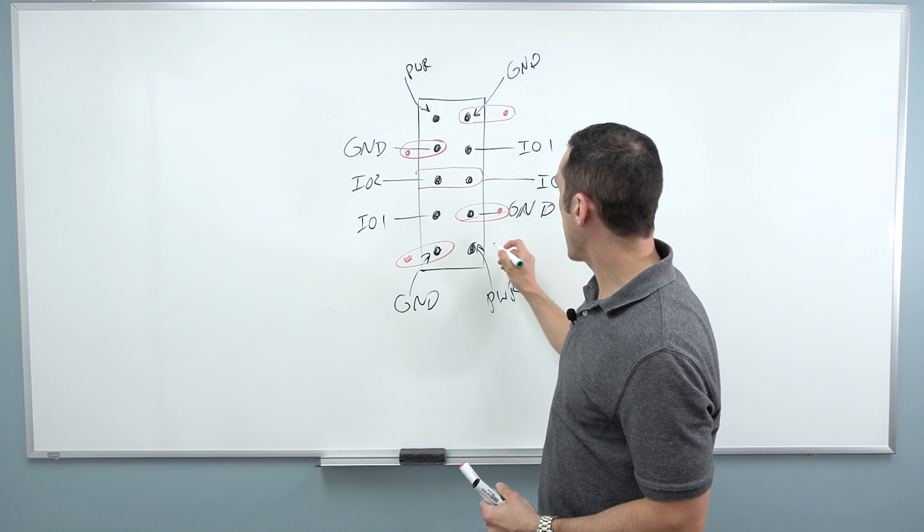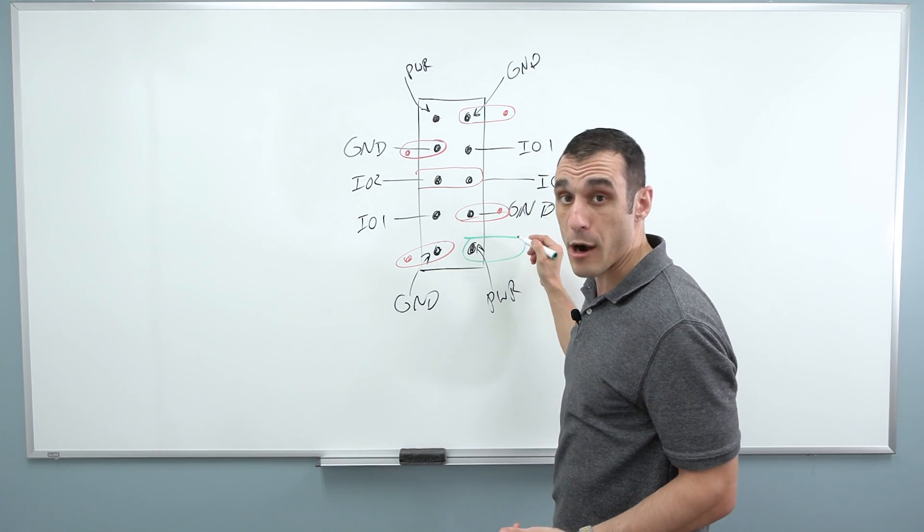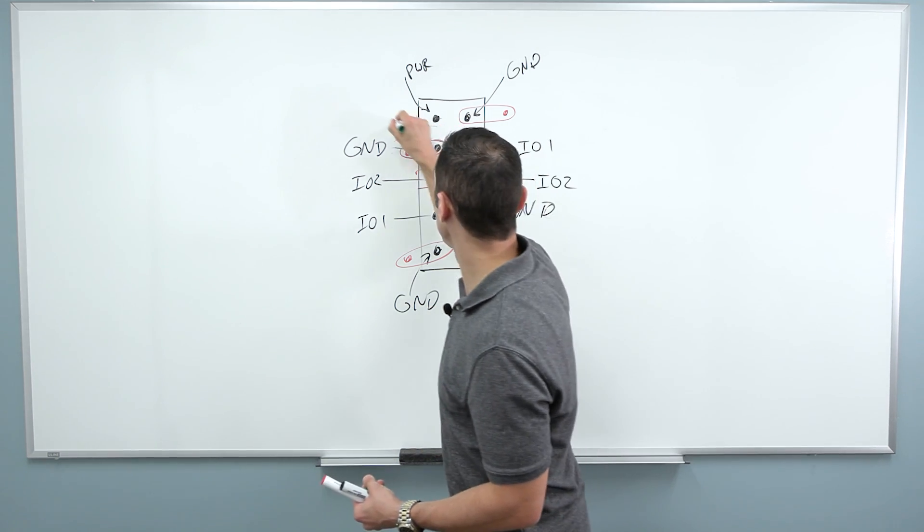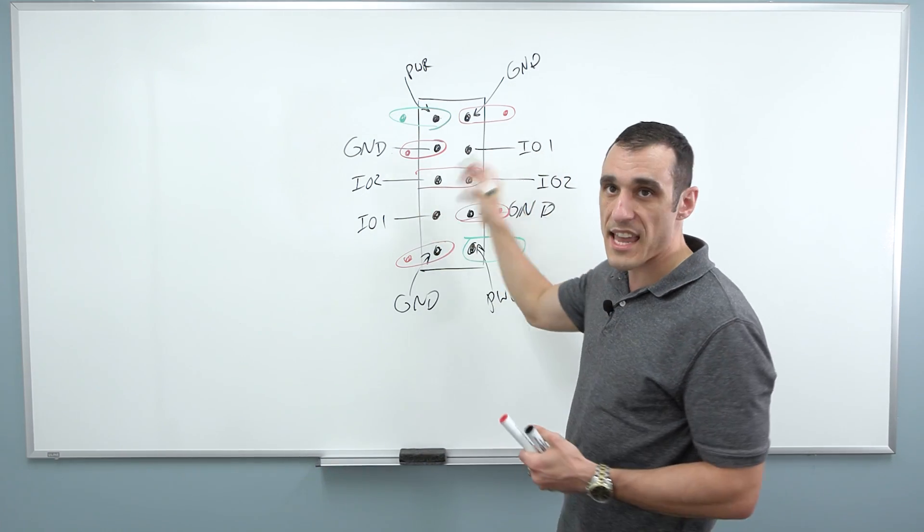With power, our power line, I'm gonna draw it in green. Let's say you have a power plane, or you have a power rail on an internal layer. This could go to your power rail. This could also go to your power rail. And then you've got these IO1 guys hanging out here.